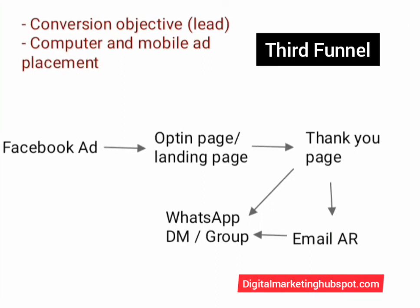Because you are using an opt-in page, you need an email autoresponder. Once they opt in, the autoresponder collects their email, phone number, and name. After they reach the thank you page, they will also receive an email, and inside that email is a link that sends them to your WhatsApp.